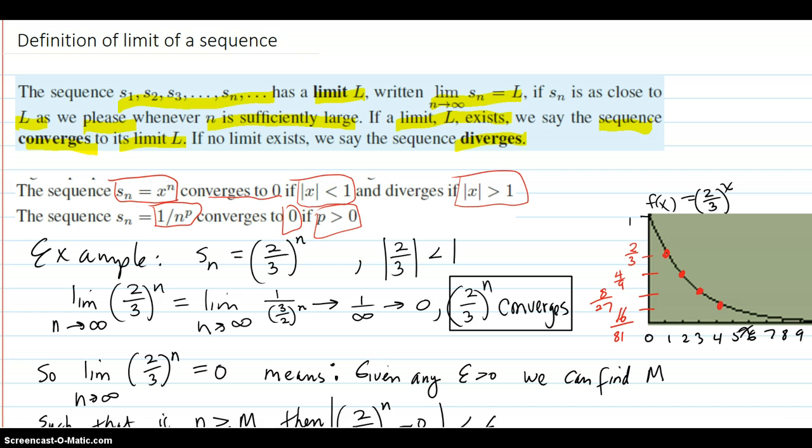First example, the sequence is 2 thirds to the n. So 2 thirds is definitely in absolute value less than 1, so this should converge to 0. So let's see mathematically, you have your limit statement of the sequence. You can rewrite that as 1 over 3 halves to the n. And 3 halves to the n, 3 halves being bigger than 1, that will blow up and go to infinity in the denominator, which means the entire fraction tends to 0. So 2 thirds to the n converges.